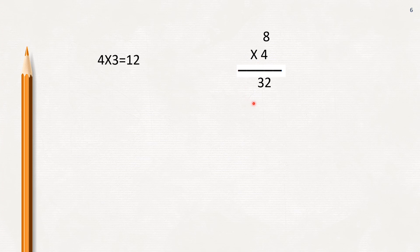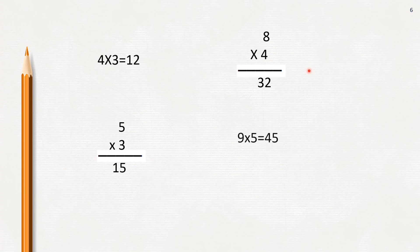Now tell me, what is 5 three times? Yes, 5 three times is 15. And what is 9 five times? 9 five times is 45.